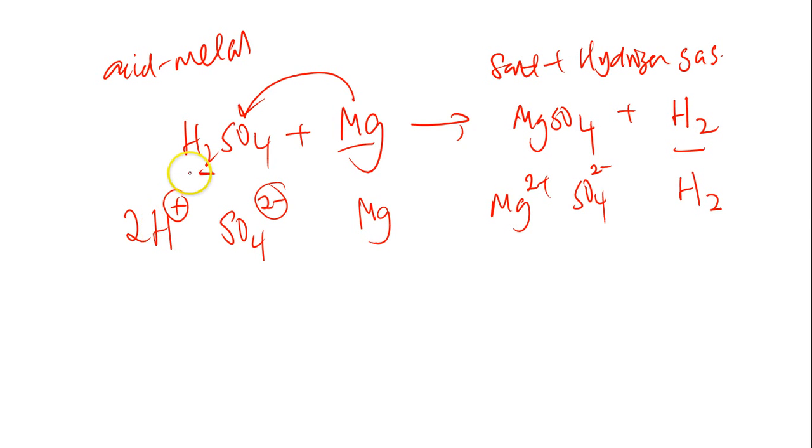So again, we cancel the like ions on both sides. Sulfate and sulfate, and what else? Nothing else. And we write the ionic equation by copying the remaining ions: 2H plus, plus Mg, gives Mg2 plus, plus H2.